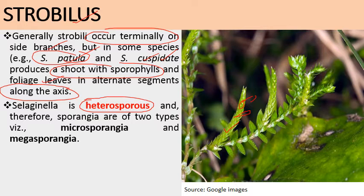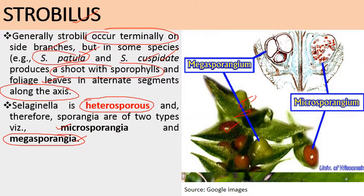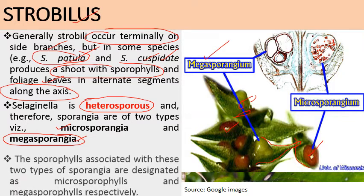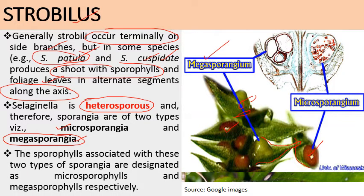Since Selaginella species are heterosporous, their sporangia are of two types. The megasporangium is present on the megasporophyll, and the microsporangium bears the microspores and is present on the microsporophyll. So microsporangia are formed on microsporophylls and megasporangia are formed on megasporophylls respectively.